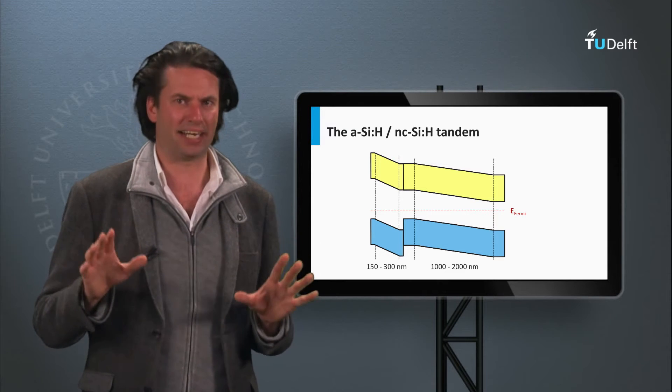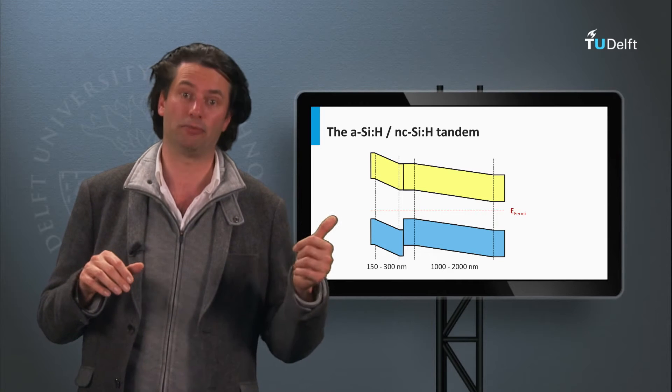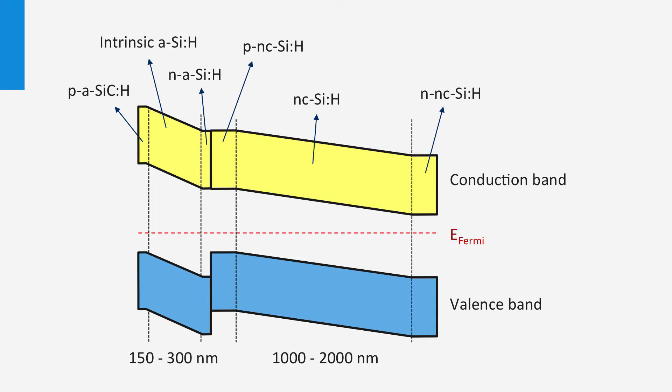Let's look at a typical band diagram of such double junction, or also referred to as a tandem cell. On the left, the electronic band diagram of the amorphous silicon top cell is shown, and on the right, the electronic band diagram of nanocrystalline silicon bottom cell is shown.